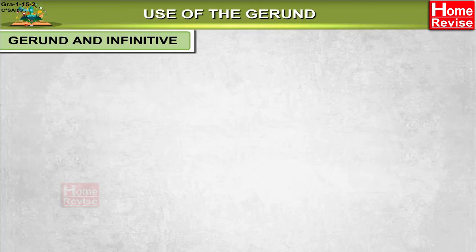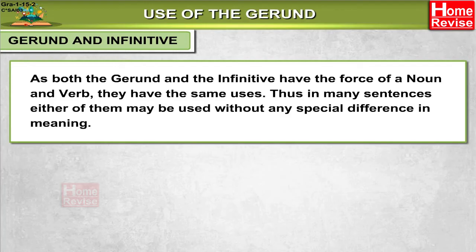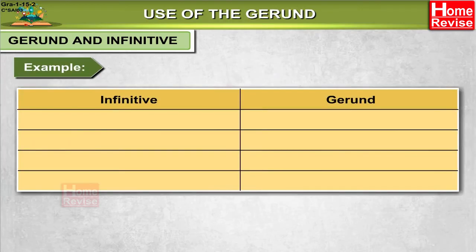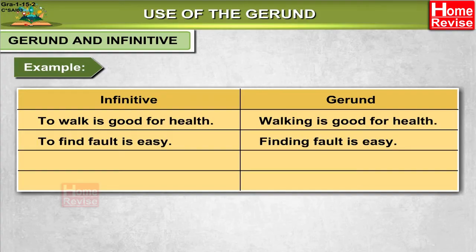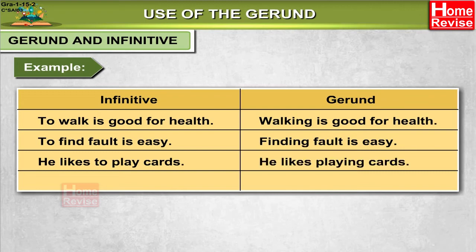Gerund and infinitive. As both the gerund and infinitive have the force of a noun and verb, they have the same uses. Thus, in many sentences, either of them may be used without any special difference in meaning. For example: Infinitive — 'To walk is good for health'; Gerund — 'Walking is good for health.' Infinitive — 'To find fault is easy'; Gerund — 'Finding fault is easy.' Infinitive — 'He likes to play cards'; Gerund — 'He likes playing cards.'